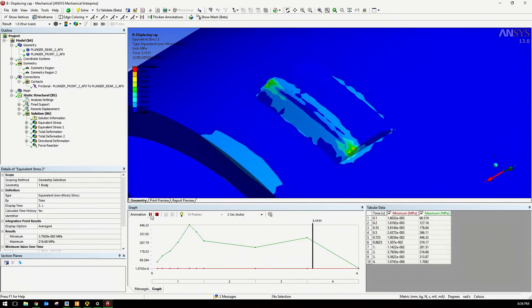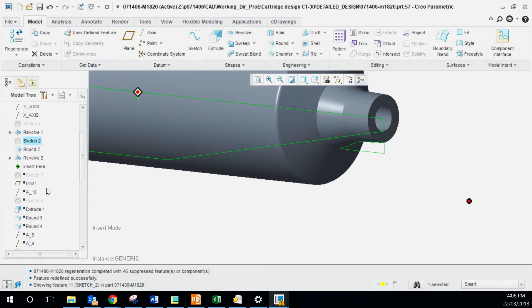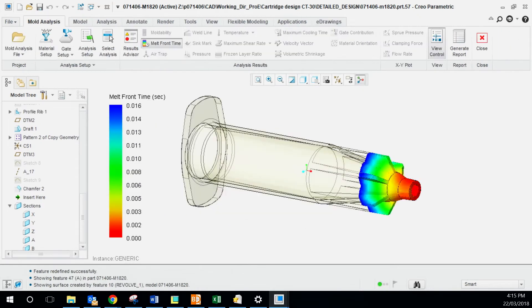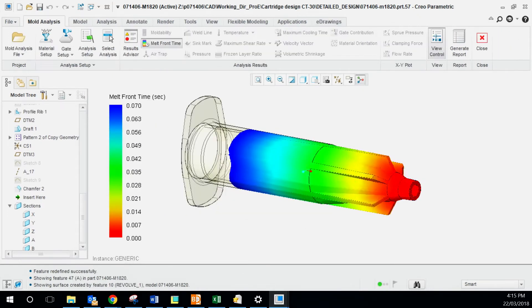This part included CADing up the various parts of the cartridge, which included the main body, the two parts of the plunger and the cap. From there, we could do some mold flow analysis before moving to our tool design.